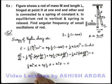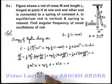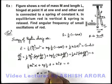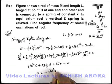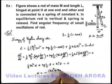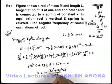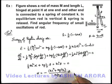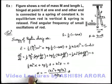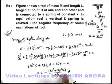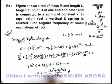So on rearranging these terms will be α equals negative of (kL² + mgL/2) divided by ML²/3 into θ. We can see that we are getting the angular acceleration of rod as a proportional function of angular displacement, which verifies that the rod is executing SHM.